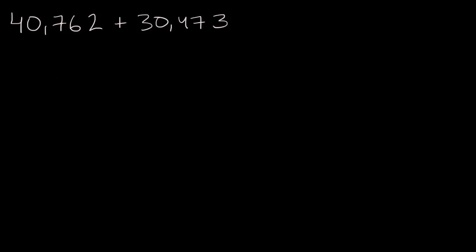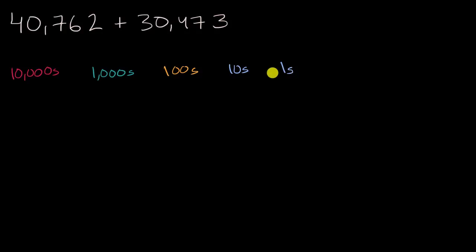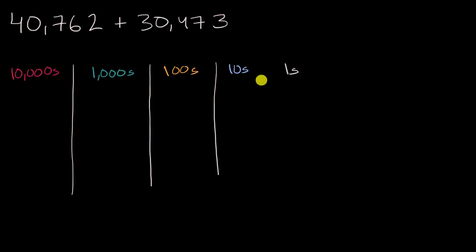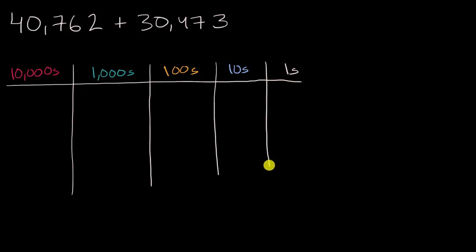What I'm going to do is first think about this in terms of place value. So let me write out my place value. This goes all the way up to the 10,000s place. So we have 10,000s, then thousands, then hundreds, then tens, and then ones. I'm going to express both of these numbers in terms of 10,000s, thousands, hundreds, tens, and ones. And then I'm going to, at the same time, use what's sometimes known as the standard method, or the standard algorithm. Algorithm is a fancy word for a system, a way of doing something.